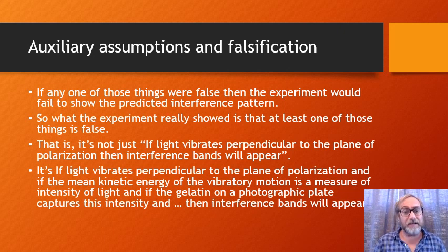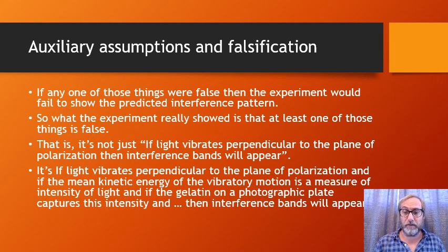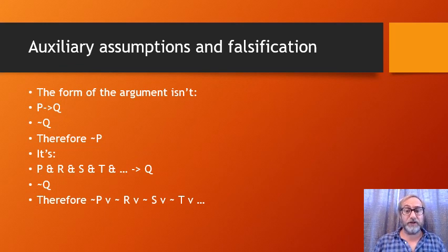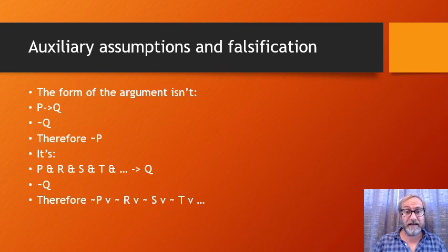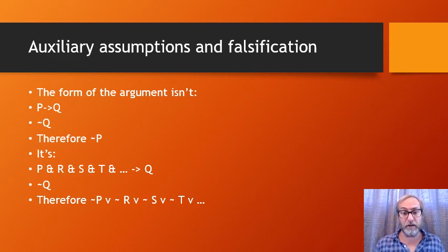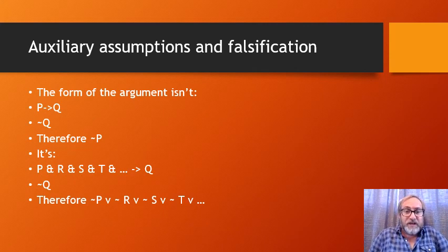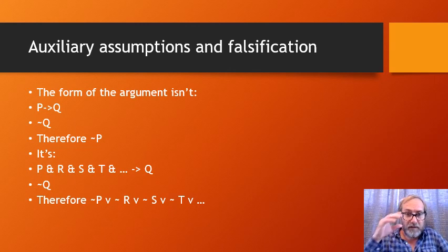The actual conditional being tested is: if light vibrates perpendicular to the plane of polarization, and if the mean kinetic energy of the vibratory motion is a measure of light intensity, and if the gelatin on the photographic plate captures intensity — then the interference pattern will appear. The logical structure is more complex than Popper assumed. You don't have simply 'if P then Q; not Q; therefore not P.' What you really have is: if P and R and S and T, then Q.